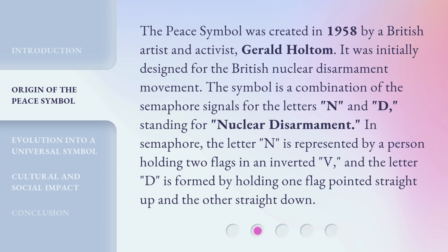The symbol is a combination of the semaphore signals for the letters N and D, standing for nuclear disarmament. In semaphore, the letter N is represented by a person holding two flags in an inverted V, and the letter D is formed by holding one flag pointed straight up and the other straight down.